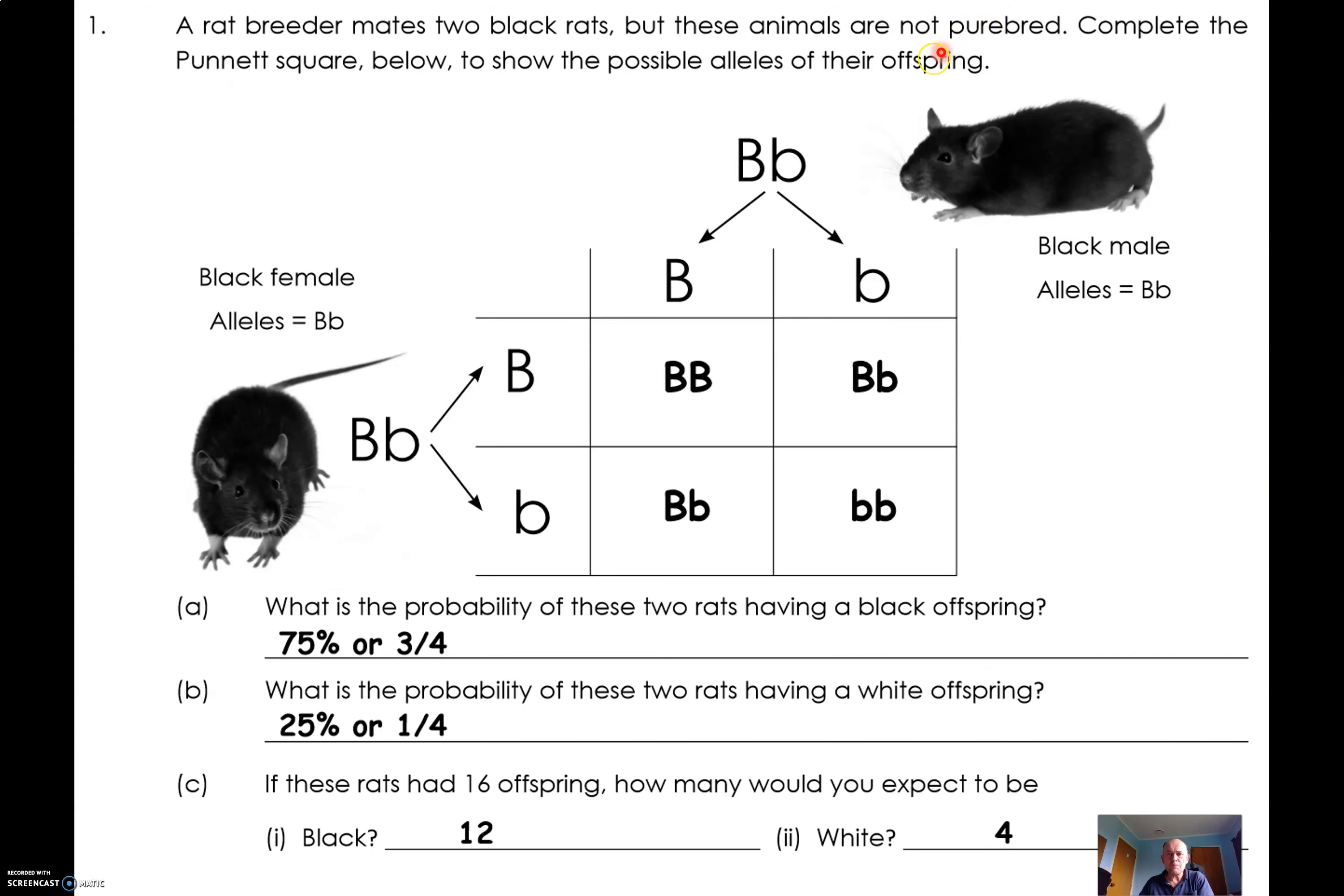If we have got not purebred, that means heterozygous with the dominant and recessive together. Well there's four possible outcomes. The dominant could pass through and then the recessive could pass through on this one and this one, and therefore your four possible outcomes, one of those outcomes produces a homozygous, well one of those outcomes will produce a homozygous recessive offspring. It'll be a white rat.